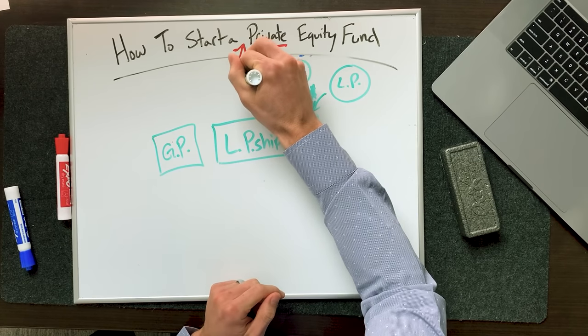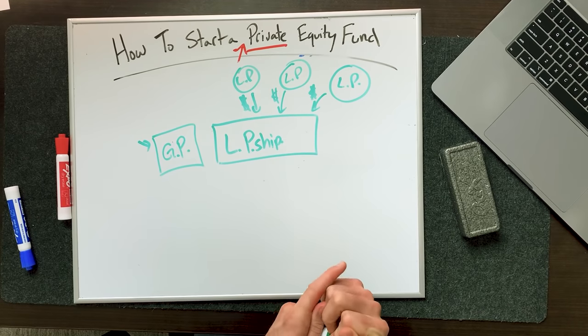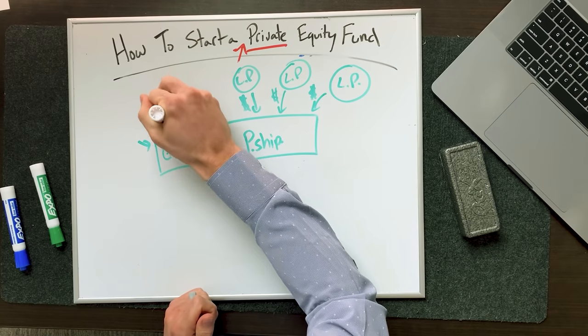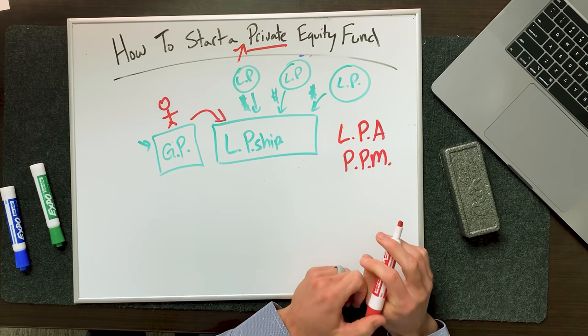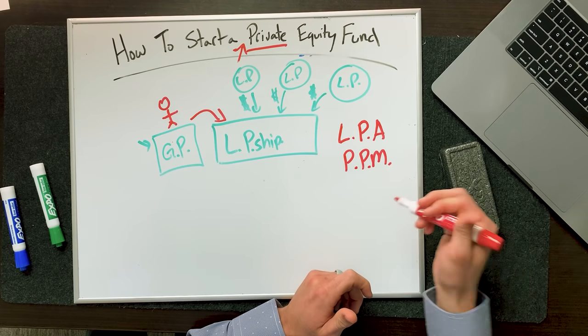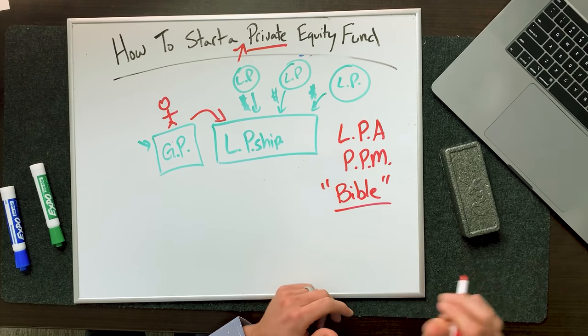Limited partners will put money into the limited partnership, and you as the fund manager, over here on your general partner, you are the managing general partner of a fund. The general partner gets discretion over what happens inside of the limited partnership. And that's all described in two governing documents called your LPA and your PPM. LPA stands for limited partnership agreement. PPM stands for private placement memorandum. These are the two governing documents of your fund — we call them the Bible, because just like the Bible, it has all the rules, all the bylaws, all the covenants that you need to keep and obey inside of your fund.